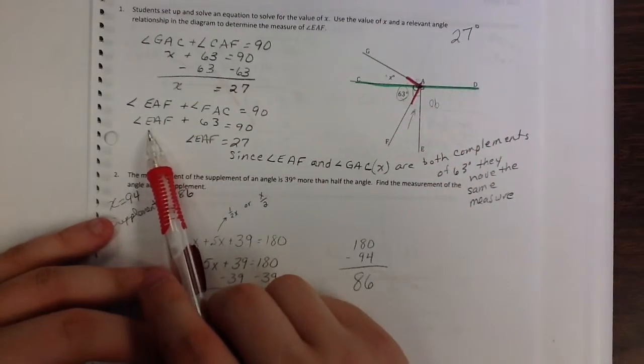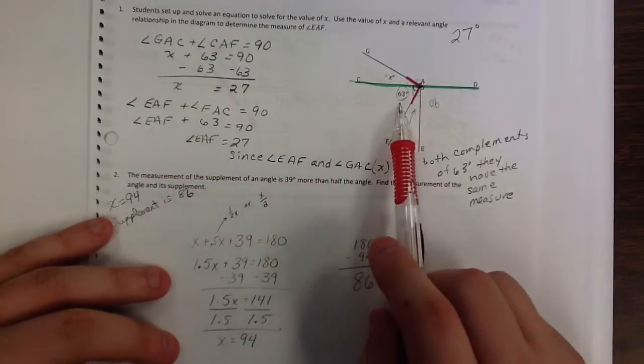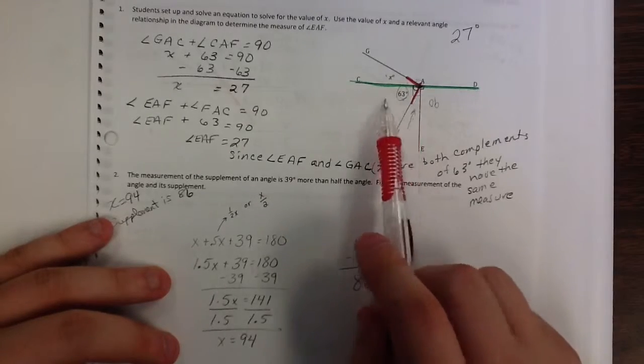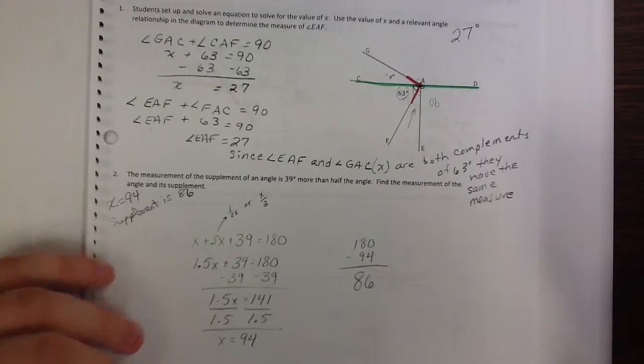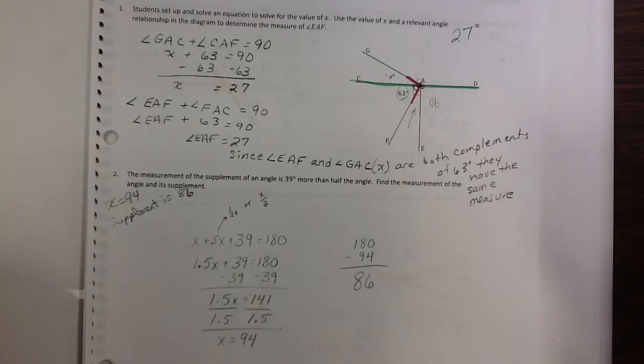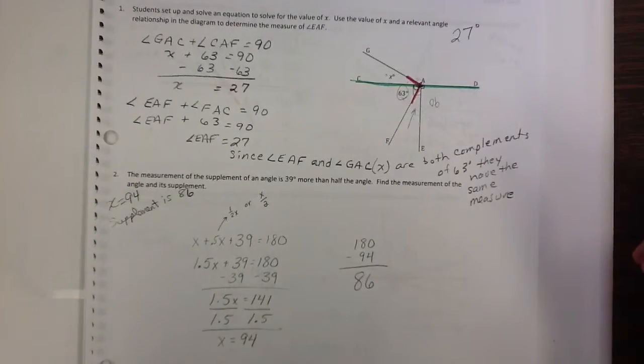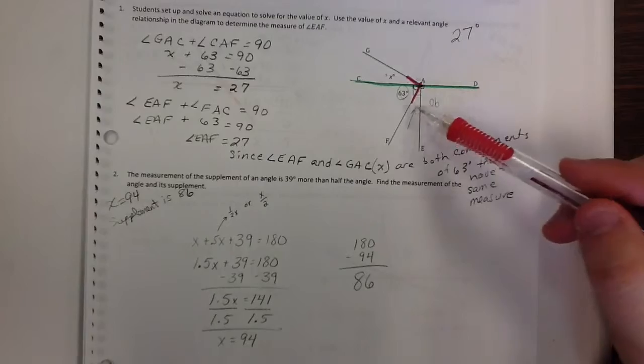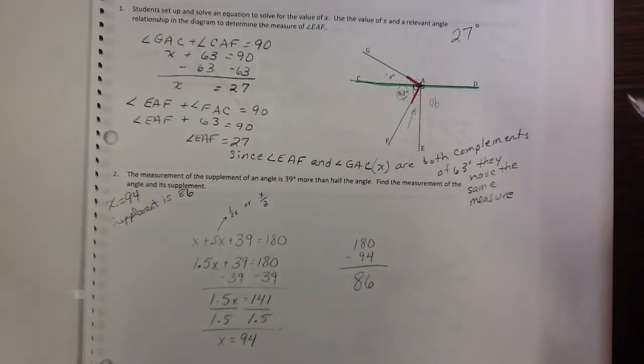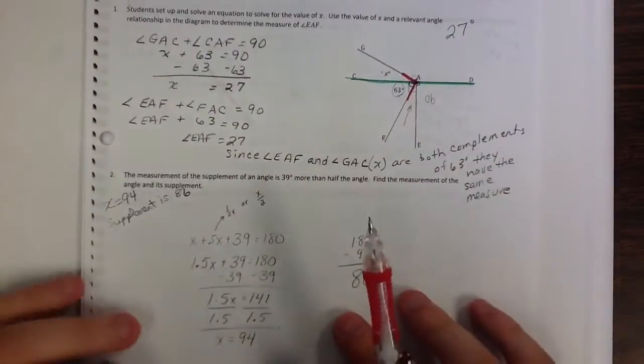And since I know that these two angles here add up to 90, and since I know that these two angles here add up to 90, I can just set it equal to 90, okay?